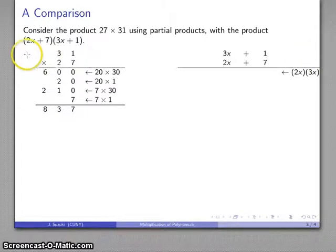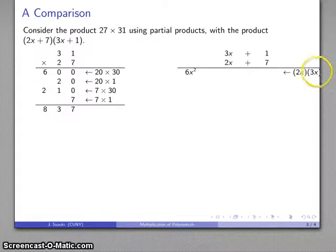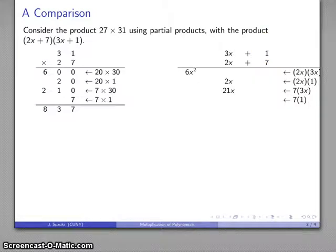2x times 3x, that's this 20 times 30. 2x times 3x is 6x squared. 20 times 1 over here, 2x times 1, 2x. 7 times 30, 7 times 3x, 21x. 7 times 1 is going to be 7.